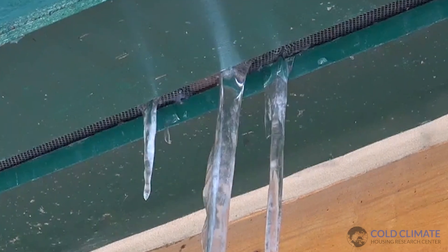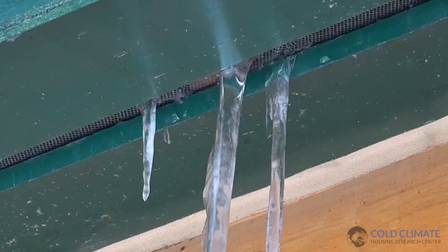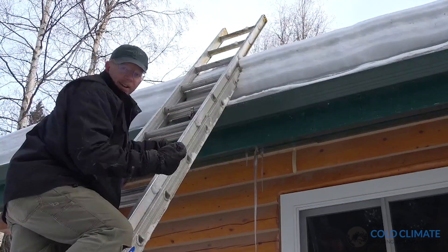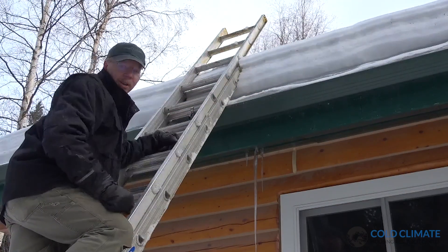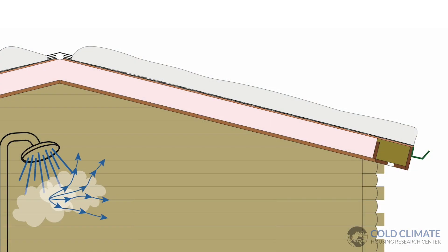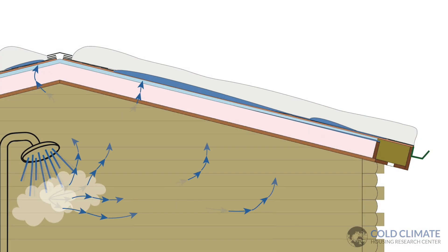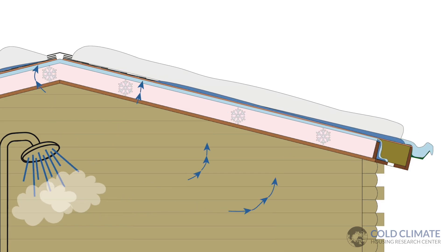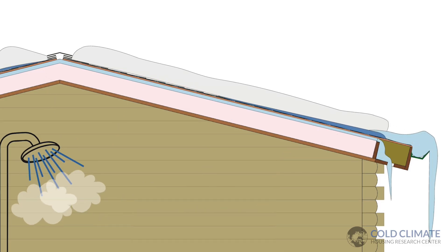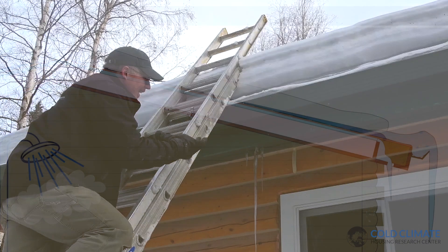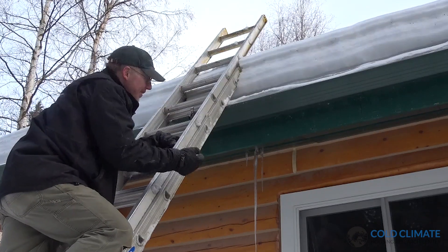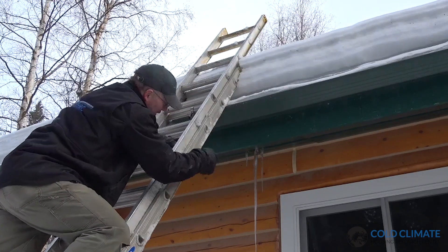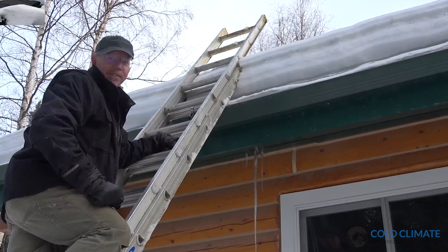My theory is that all winter long there's been air leakage up into this ceiling, and that air leakage has been transporting water vapor, which has then been condensing and freezing inside the rafter bays. Then we had an unseasonably warm day — it was 40 degrees — and all that ice that was building up inside the roof suddenly thawed, melted, and ran down over the wall and came out of this soffit vent.